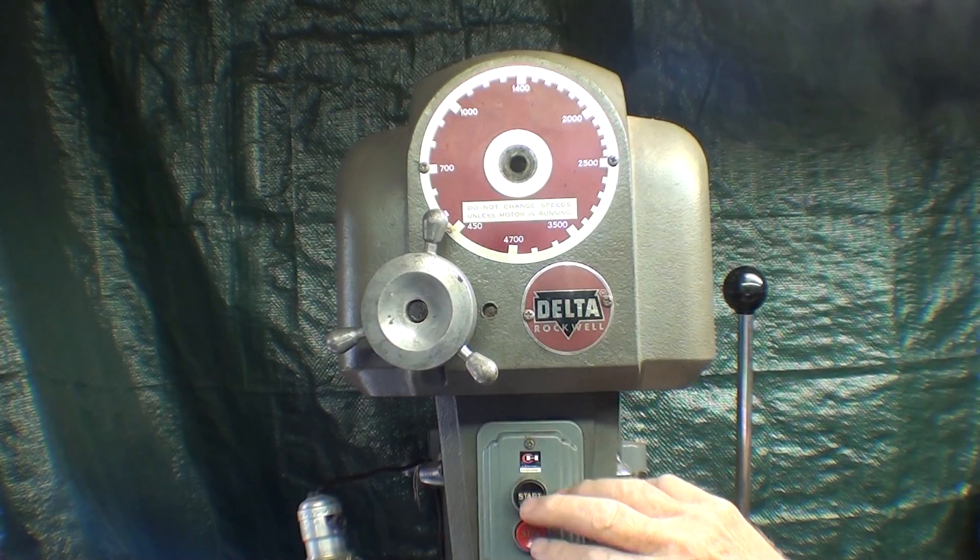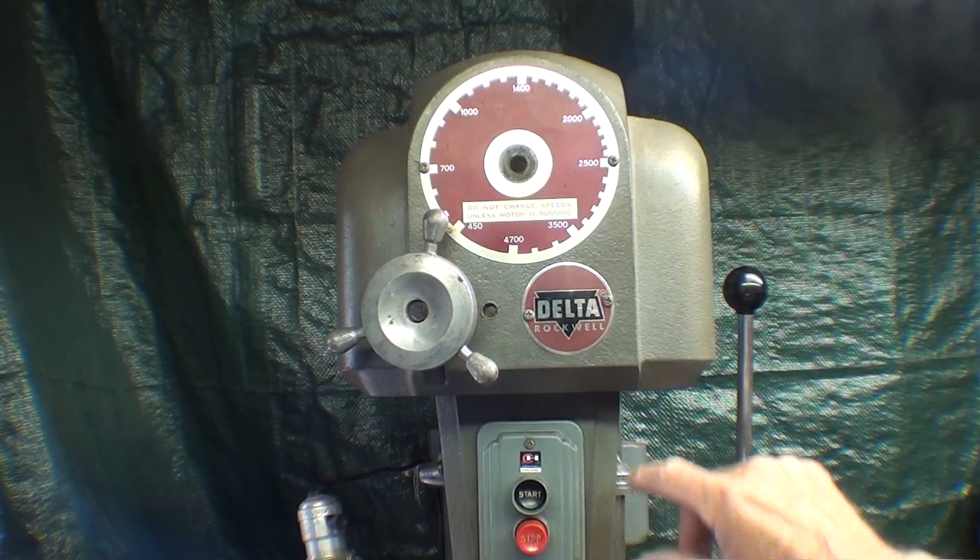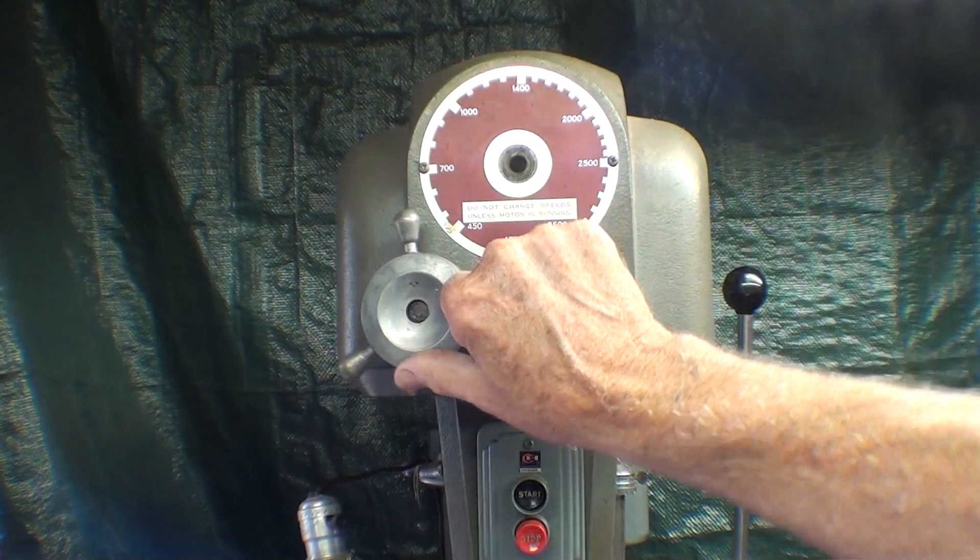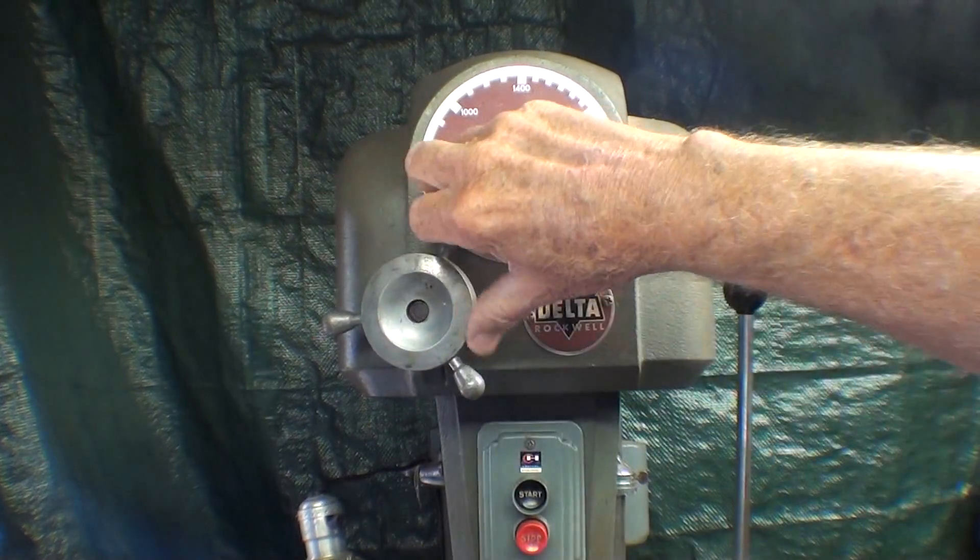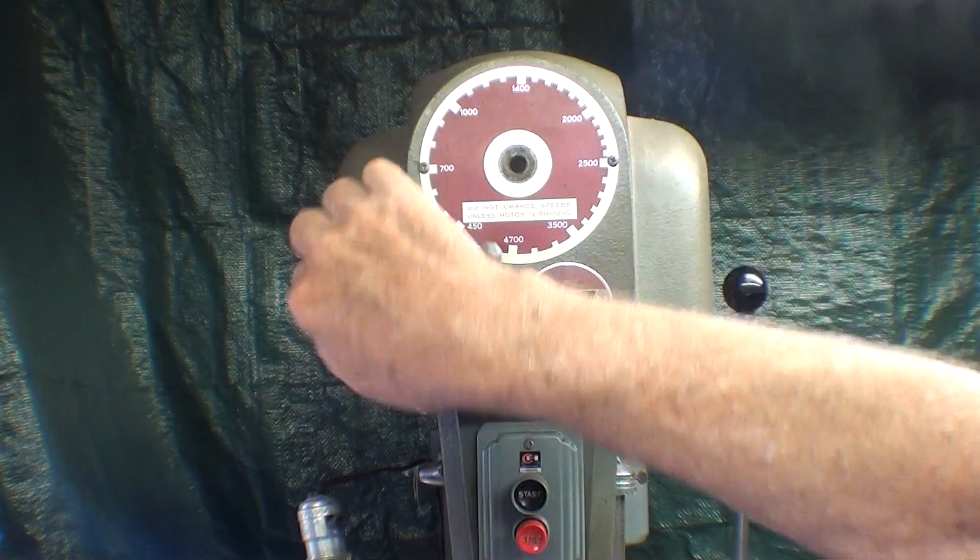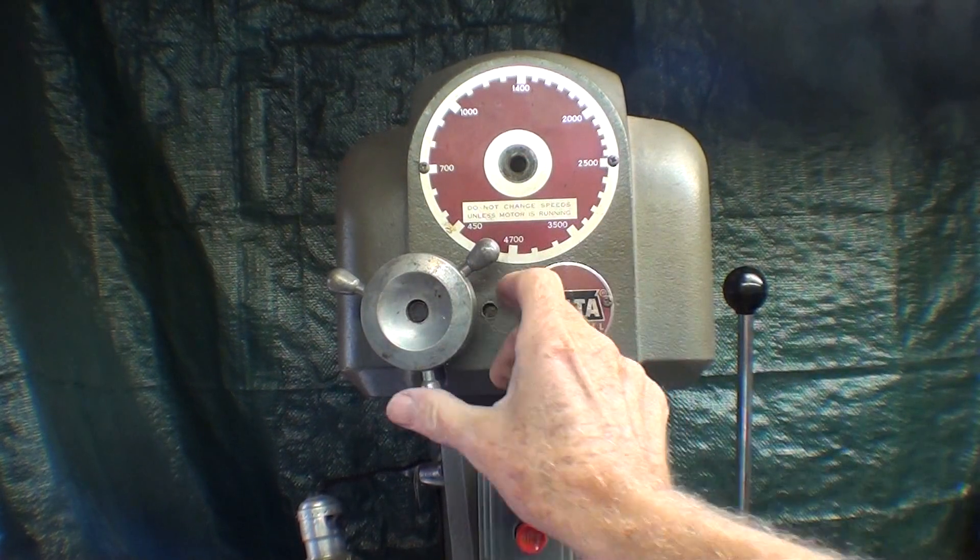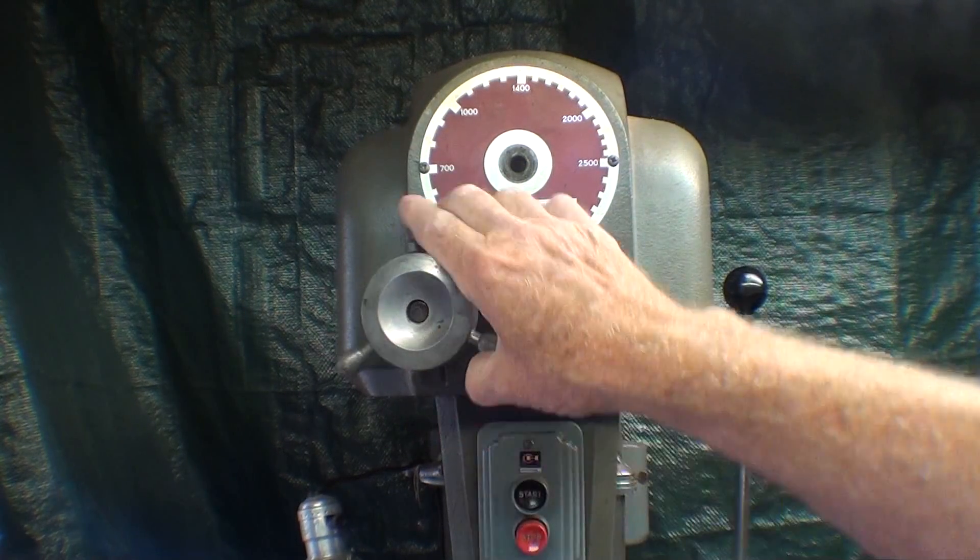Alright, let me start it and run it through its RPM range. That's just done by turning this little knob. Its range is about from 450 up to approximately 3400 or so.